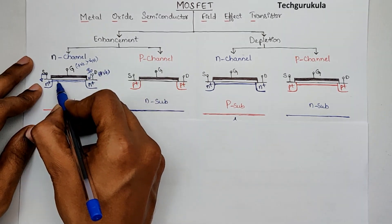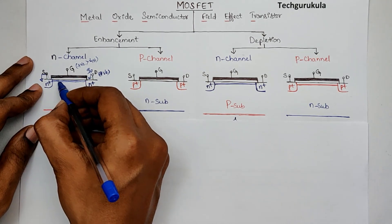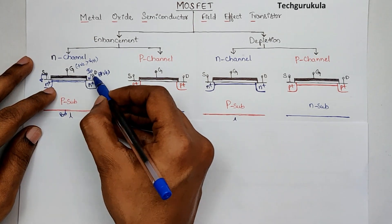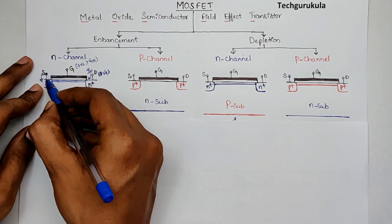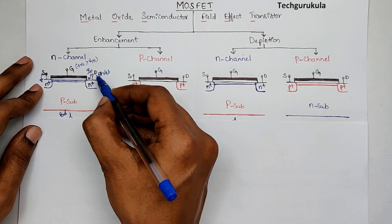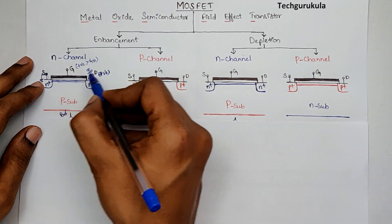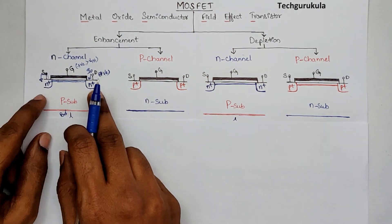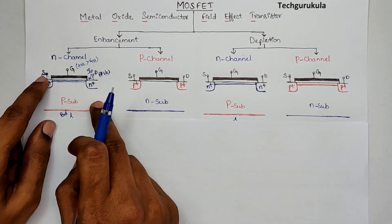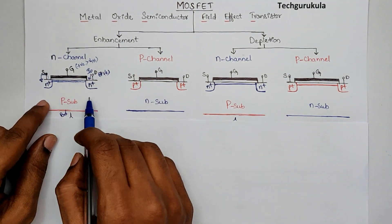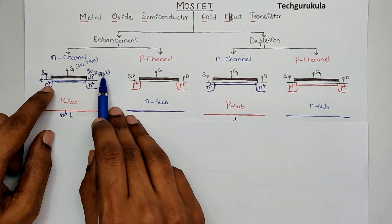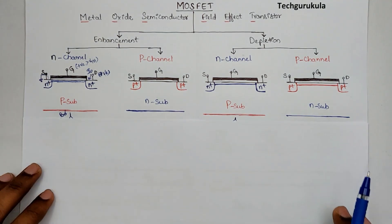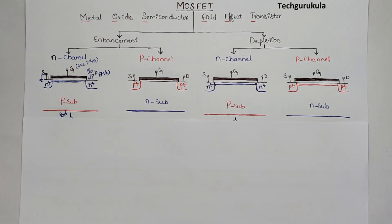When current is flowing in that direction, electrons flow from source to drain — meaning source is actually supplying the majority carriers (electrons) and drain is draining them, taking them away. Hence we call one terminal source and the other drain. Drain must always be at a positive potential with respect to source. Although the device is symmetric and you could flip them, you should always remember: whichever terminal is at higher potential is the drain, and the lower potential terminal is the source.